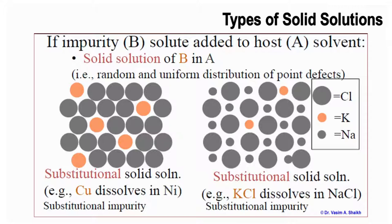An example is copper dissolving in nickel — a substitutional solid solution. The copper atoms (orange) take the place of nickel atoms (grey), randomly and uniformly distributed but occupying the host atom positions. On the right-hand side, potassium chloride dissolves in sodium chloride, where potassium takes the place of sodium — another substitutional impurity replacing the host atom.